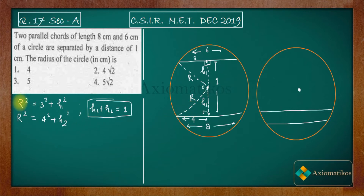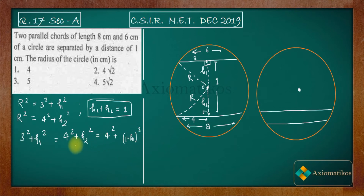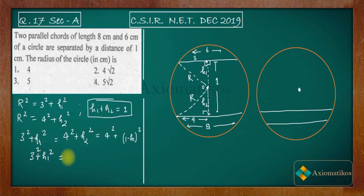Since both expressions equal r², we can equate them: 3² + h1² = 4² + h2². Now substitute h2 = 1 − h1. This equation simplifies nicely — it is not even quadratic, it is linear because the h² terms cancel out. Let us solve this equation.